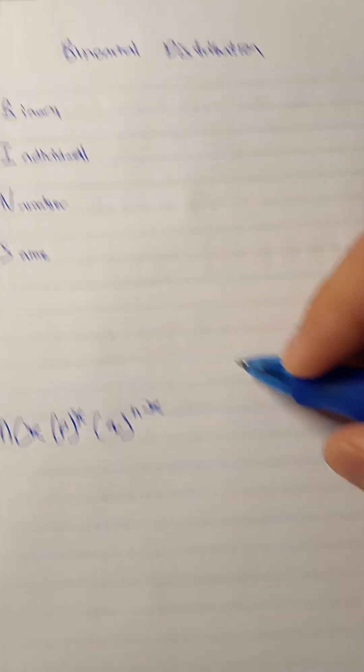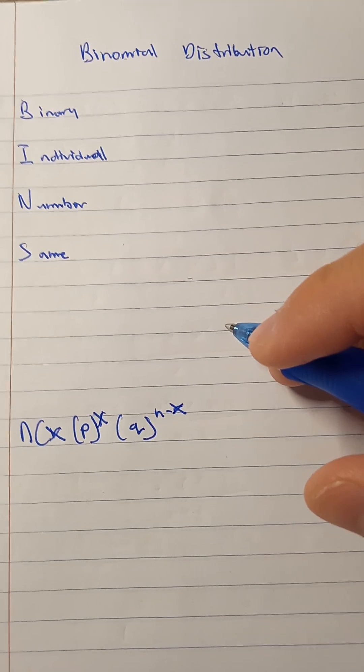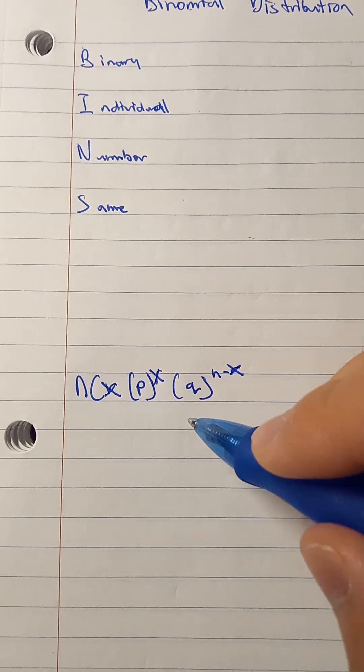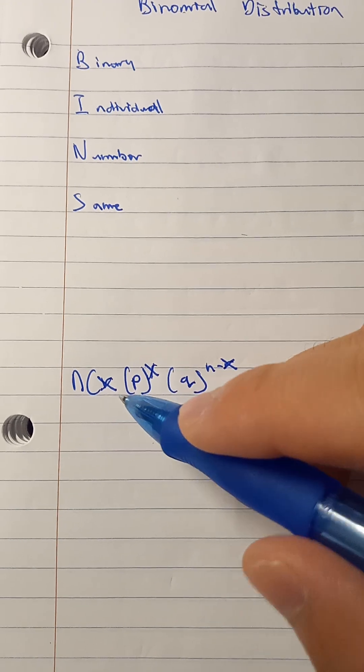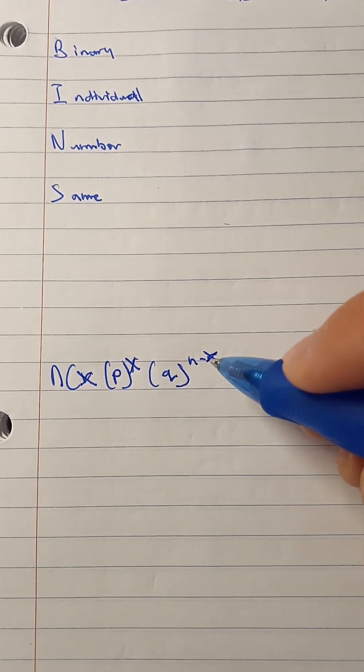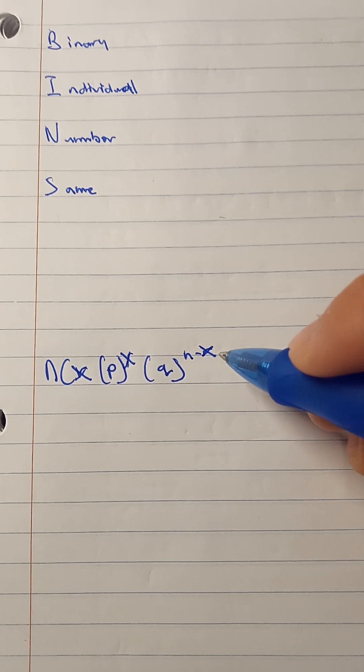The probability of a coin flip is 50-50 no matter how many times that I flip it. The probability can be found with this formula: N choose x times p to the x times q to the n minus x. What do these mean?